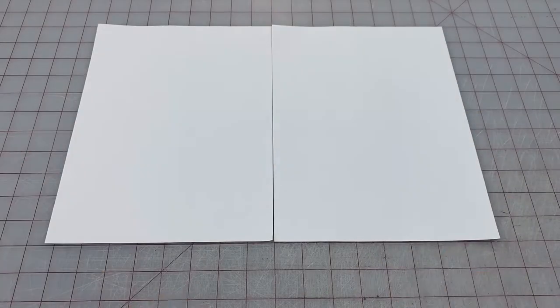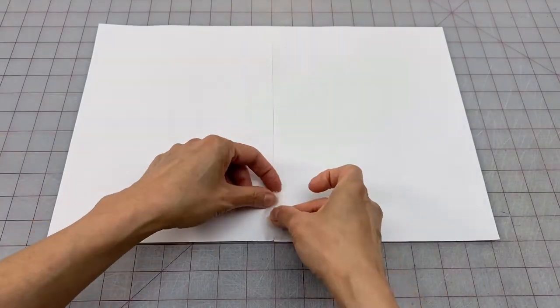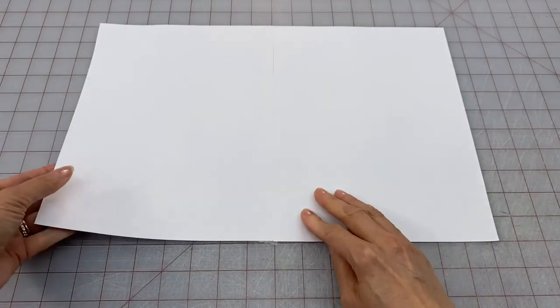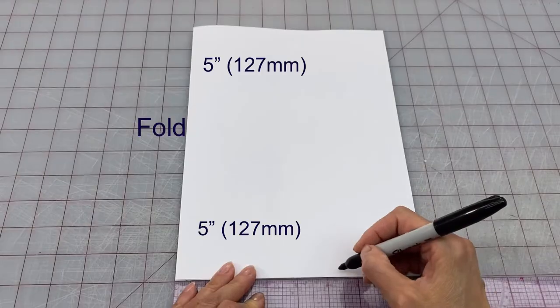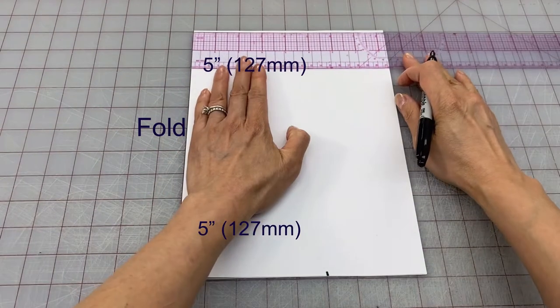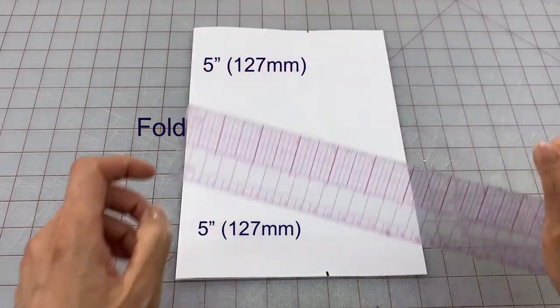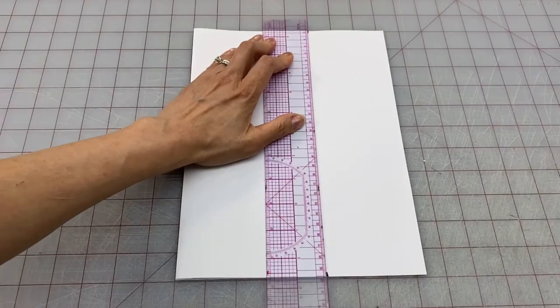To make the pattern first tape the longer sides of the paper together, then fold it in half along that seam and press. Mark five inches from the fold along the bottom and top of your paper, place your ruler along those marks and cut.